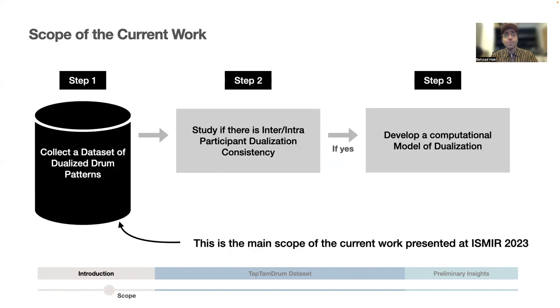If dualization is a meaningful reduction, then a computational model can be developed with multiple applications ranging from perceptual studies to retrieval and generative tasks. To confirm that this reduction can be meaningful, first, a data set of dualized patterns would be needed. The development of this data set is the main scope of the current work presented at ISMIR 2023 conference.